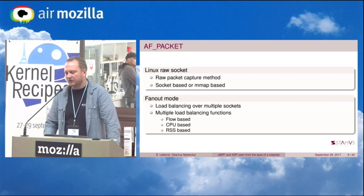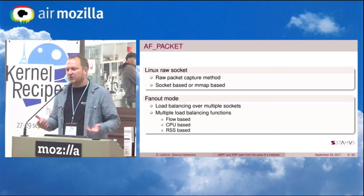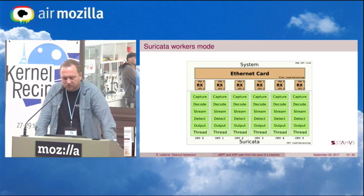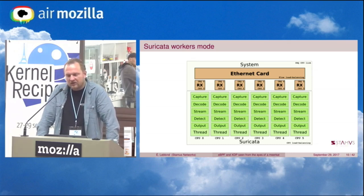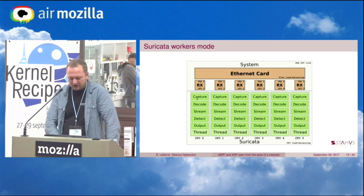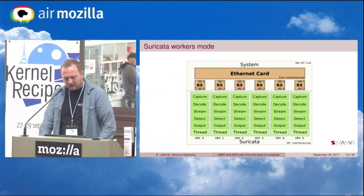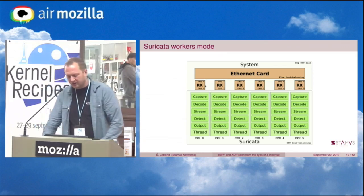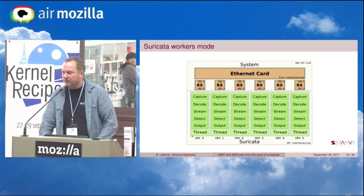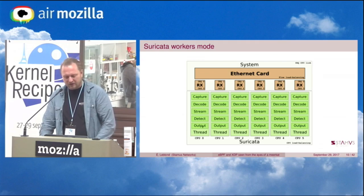We can scale in software, but the sooner we start to load balance the better. The most-used threading system in Suricata is what we call the worker mode, which does all the tasks I described in the reconstruction schema, using load balancing on the NIC, then splitting — going to one CPU — and one CPU does all the processing in one chain of tasks kept on one thread.